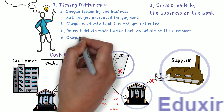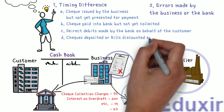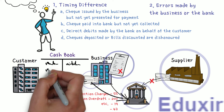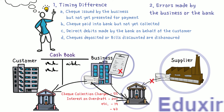The next reason is checks deposited or bills discounted that are dishonored. When the business deposits a check in the bank, it debits the check amount in the bank column of the cashbook. In some cases this check will be dishonored and the amount is debited in the bank passbook. Due to the timing difference, the business does not know about the check being dishonored, so there will be no entry for the dishonored check in the cashbook. This is also applicable for the dishonor of bills discounted, and the firm will know about it only after the bank statement is received.